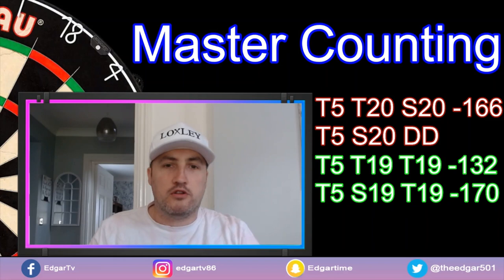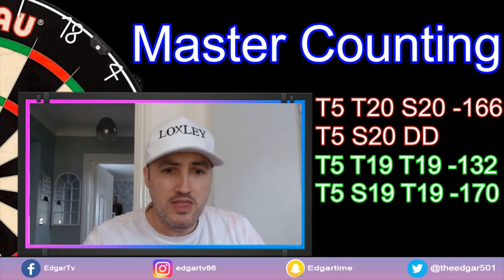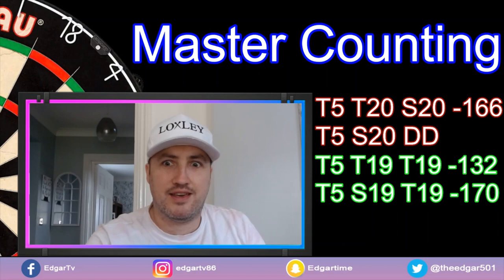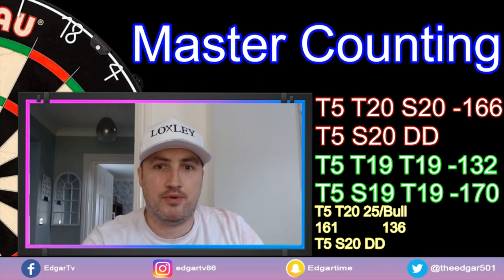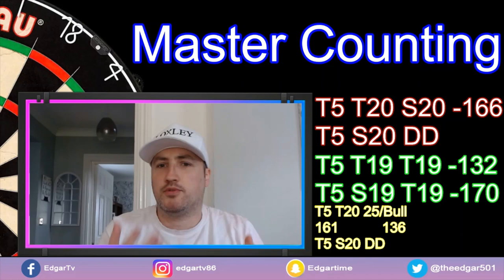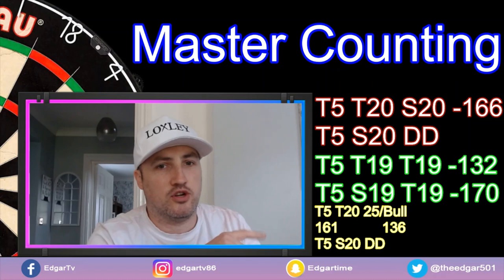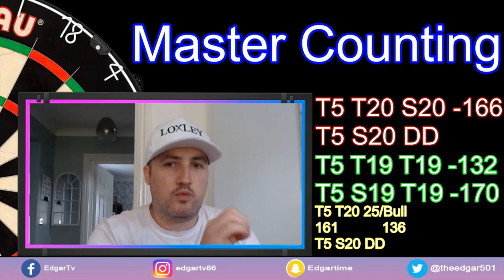So on 261, treble 5 with the first dart, then straight down to those 19s. I put this out on Twitter at @Edgar501 — if you're not following me, the handle is in the bottom corner. I also got a response discussing going down for the bull: if you get the treble 20 with the second dart you can switch to the bull. Yes, that's correct. You go treble 5, treble 20, then 25 or the bull — though hitting the bull leaves you 136.